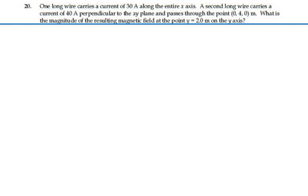Here's problem 30-20 dealing with Ampere's Law. One long wire carries a current of 30 amps along the entire x-axis. A second long wire carries a current of 40 amps perpendicular to the x-y plane and passes through the point 0, 4, 0.